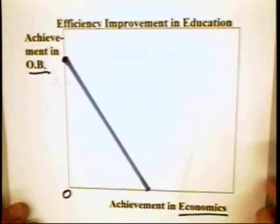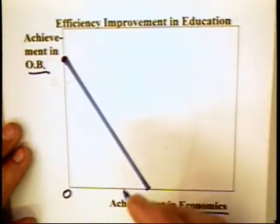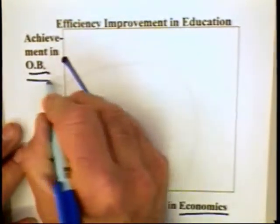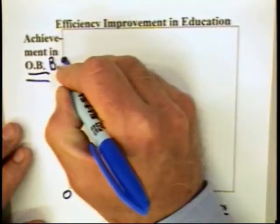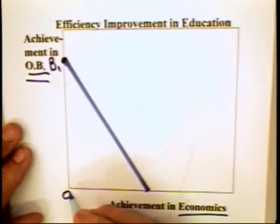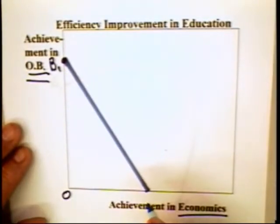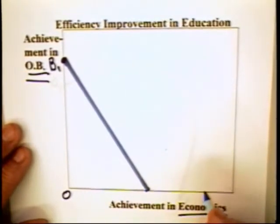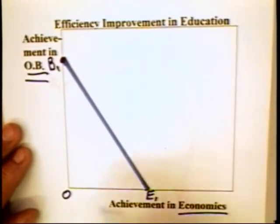You might, in fact, be taking these two courses right now. The individual operates under constraints. If he or she applies all available study time to learning organizational behavior, they might be able to learn as much as B1 in organizational behavior but zero economics. On the other hand, if the individual applies all effort to economics, they would learn E1 in economics but zero organizational behavior.